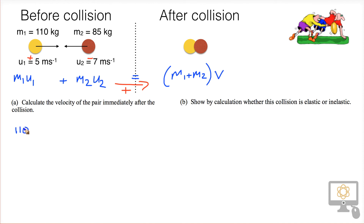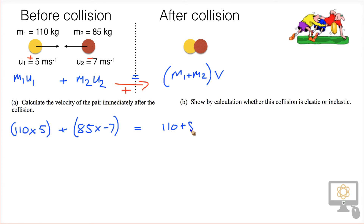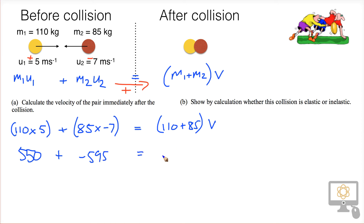Applying the formula: M1 is 110, U1 is 5, giving the yellow guy's momentum. We add to that the red guy's momentum: 85 times minus 7 — it's minus 7 because he's moving in the opposite direction. That equals the total mass after the collision, which is 110 plus 85, multiplied by the velocity after the collision. So: 110 times 5 is 550, and the red guy's momentum is minus 595. The total mass is 195 times V.